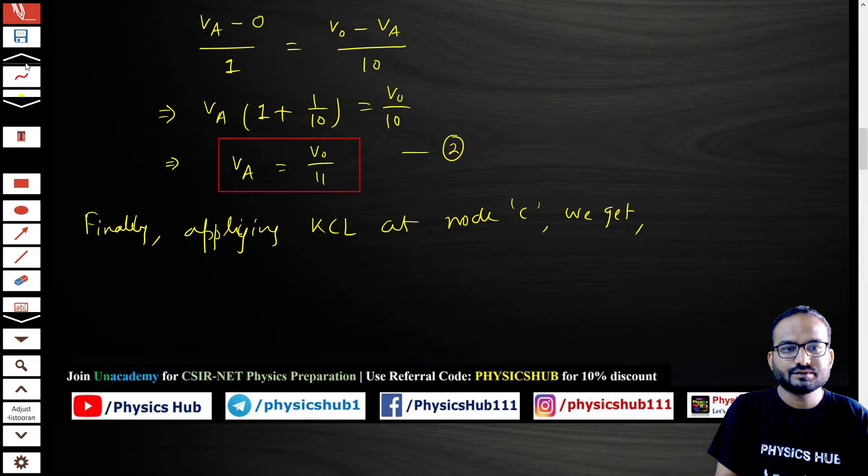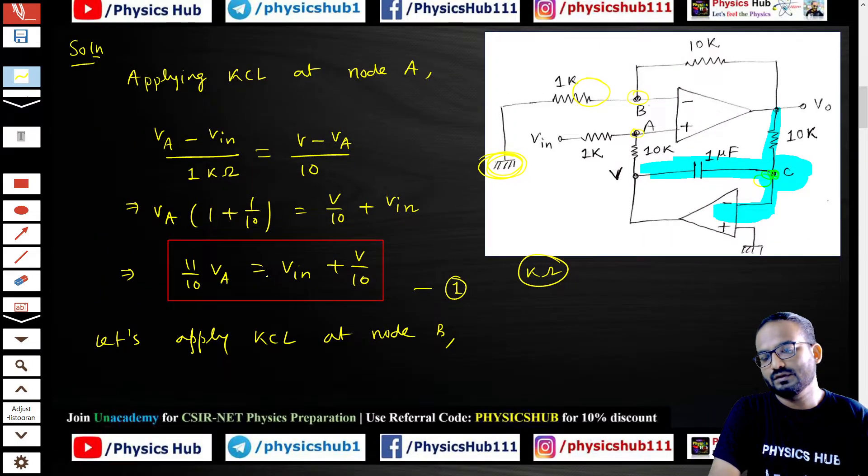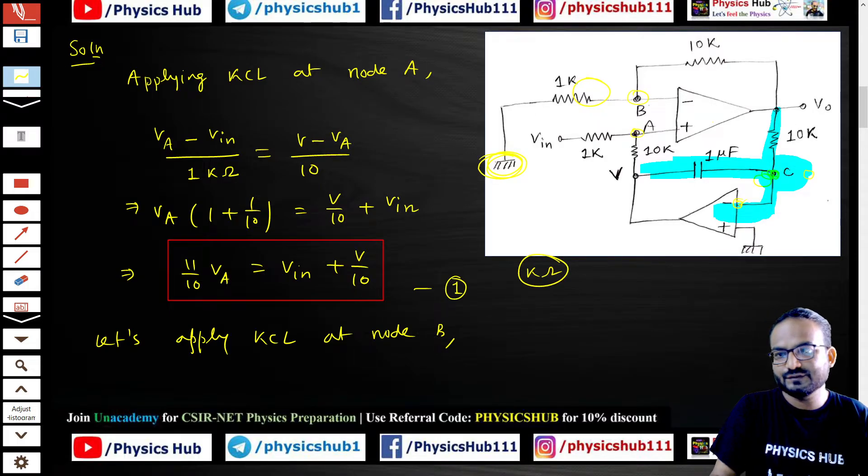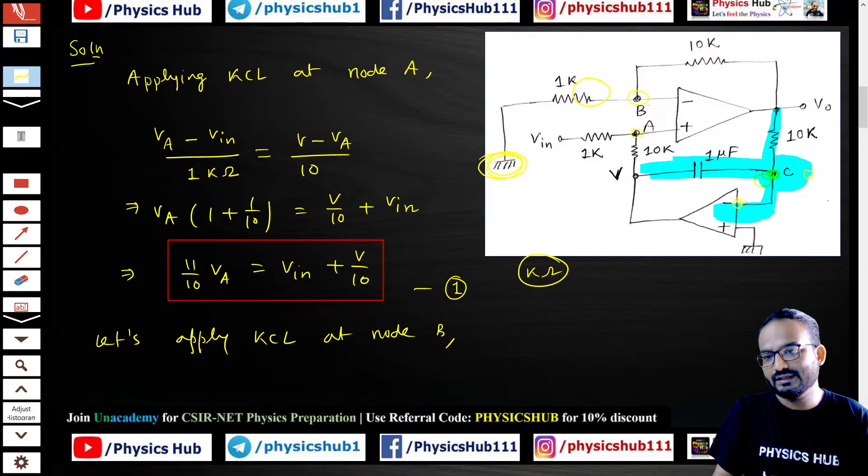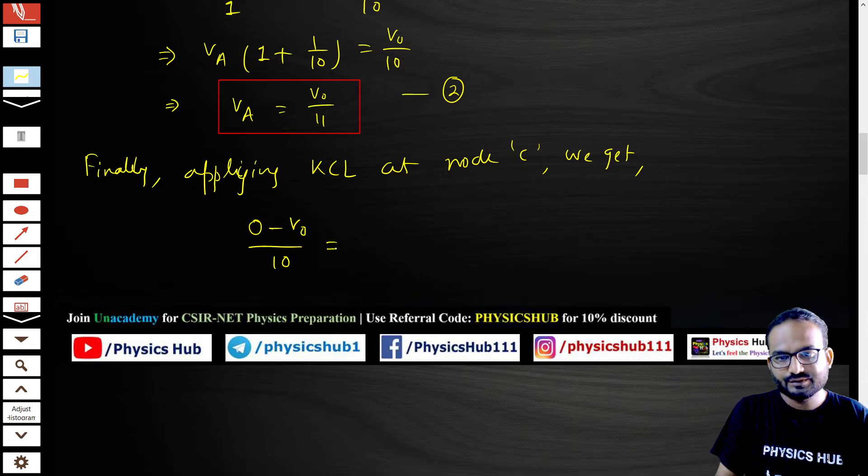If you apply KCL at node C, you're going to get zero minus V_0 by 10. This is virtually ground, so for this the voltage is zero. That is why we have written zero minus V_0 by 10. This would equal the current V minus 0 by one microfarad.